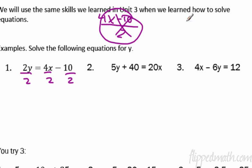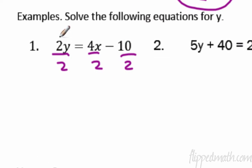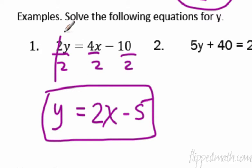We want to put the equation in what's called Y equals MX plus B, or slope-intercept form. This is all to help us graph, and graphing is a huge deal in algebra. So we want to avoid that whole big division line and divide each individual term separately. The 2 over 2 cancels, you get Y; 4 over 2 is 2, the X hangs out; and negative 10 over 2 is negative 5. So this equation in slope-intercept form is Y equals 2X minus 5.